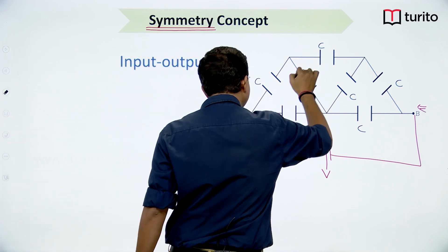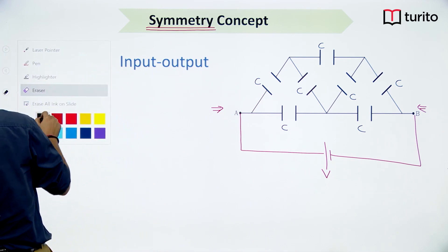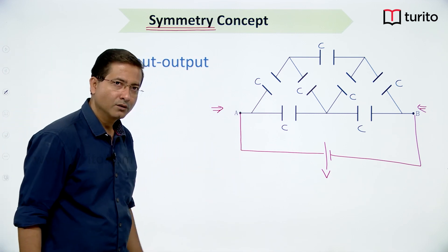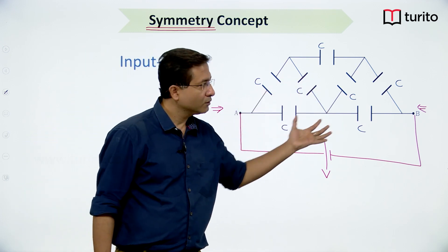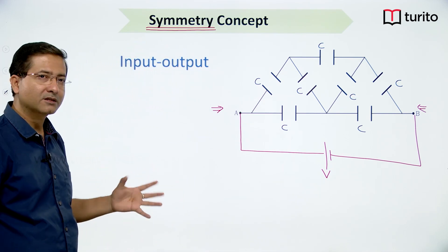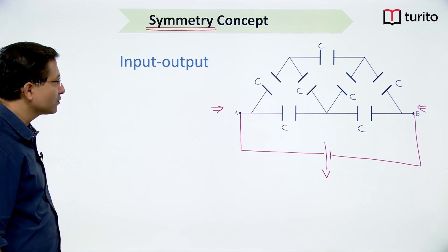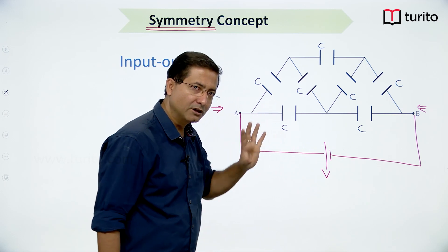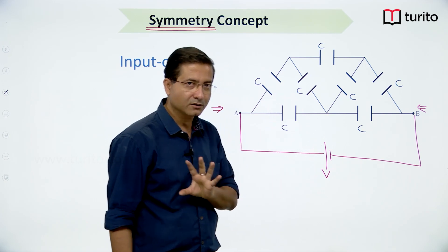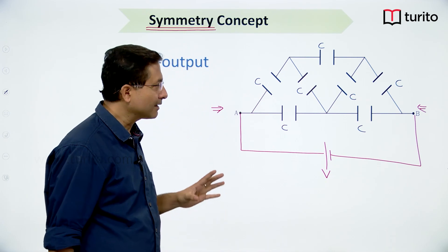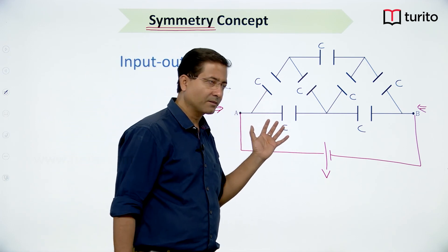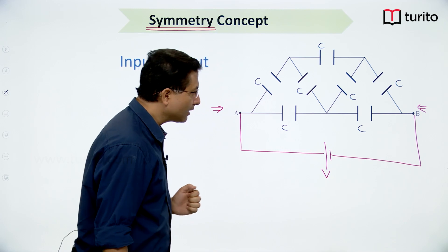I cannot directly identify series or parallel combination, and there is no conducting wire joining two junctions, and Wheatstone bridge doesn't apply either. So I use symmetry. If the total current delivered is I, it enters and splits into I1 and I2. Because the circuit has input-output symmetry, certain currents at symmetric positions must be equal.